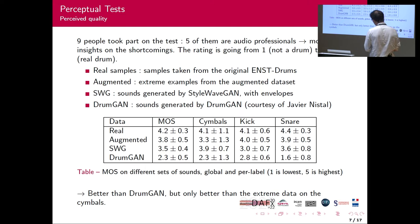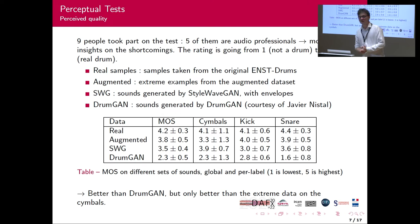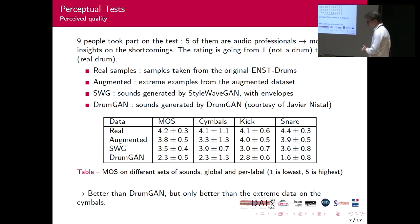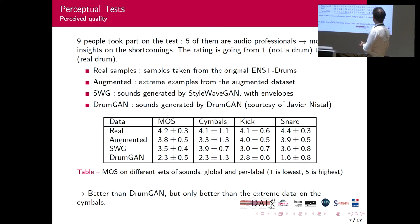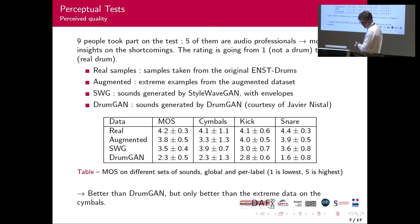Nine people took part in the test. Most of them were audio professionals and gave us a lot of insights on the shortcomings of our sounds. We compared four types of sounds: the real sound from ENST Drums, the extreme example from our augmentation process, the sound generated by StyleWaveGAN, and the sound generated by DrumGAN, courtesy of Rabiard Nistal. StyleWaveGAN is never as good as the real sound, but it's better than the augmented samples, and compared to DrumGAN, it's perceived as better.